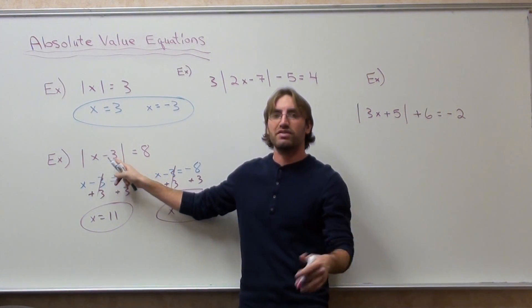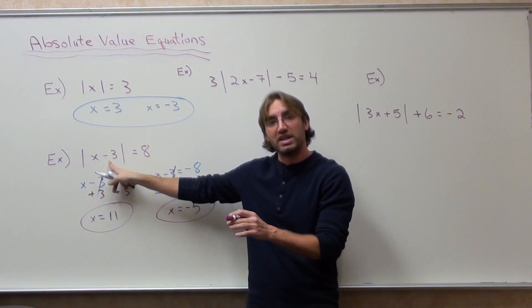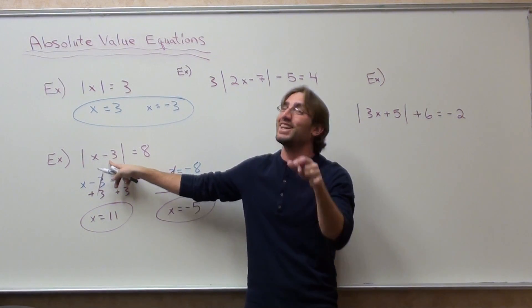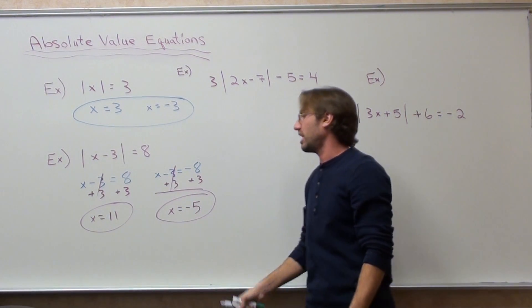Negative five minus three is negative eight. Absolute value of negative eight is eight. They both work. And those are your two answers.